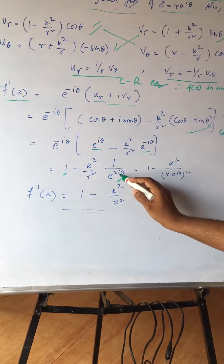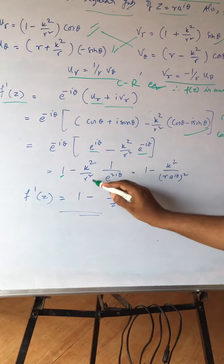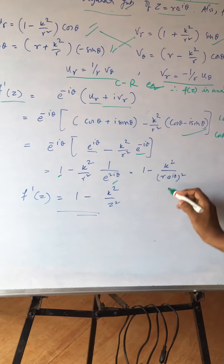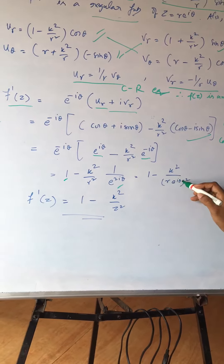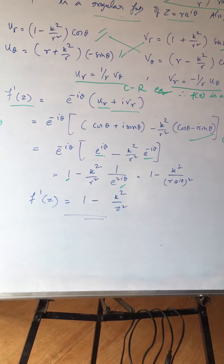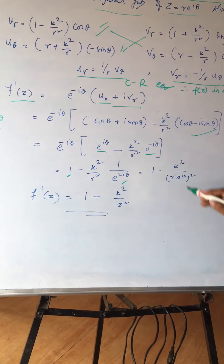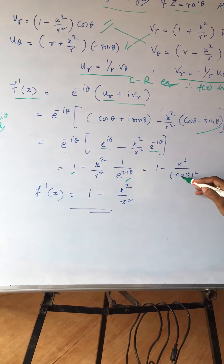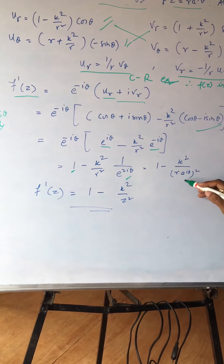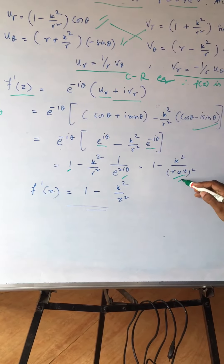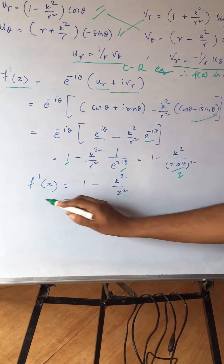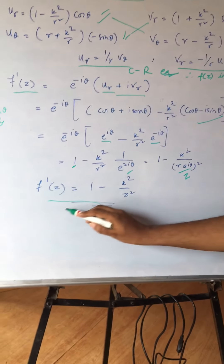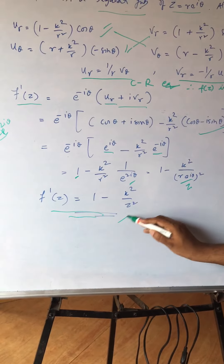Now looking at the result, I have r² and e^(2iθ), which I can combine as (r·e^(iθ))². Since r·e^(iθ) = z, substituting this gives the final result for f'(z).